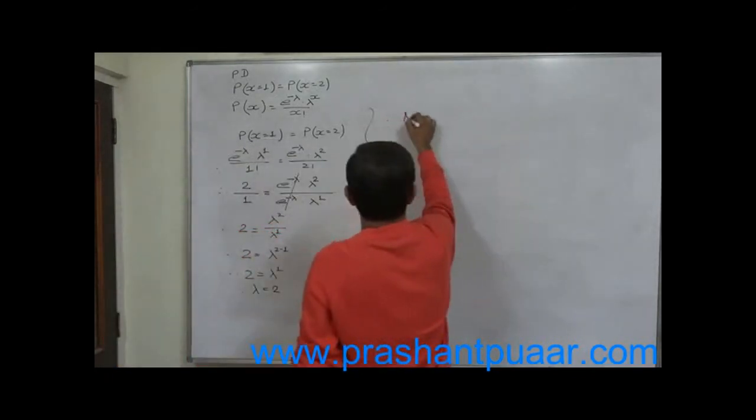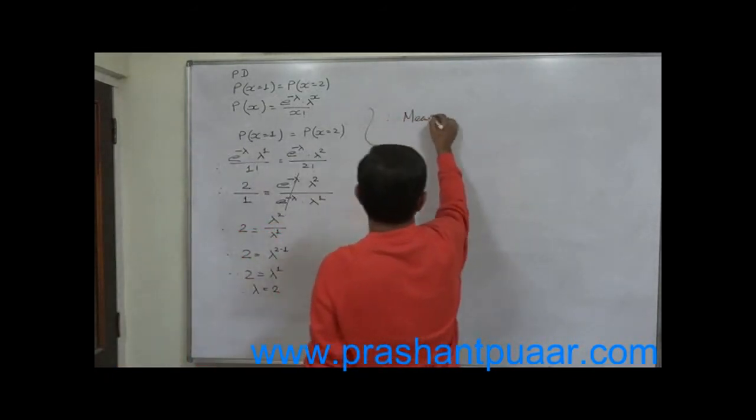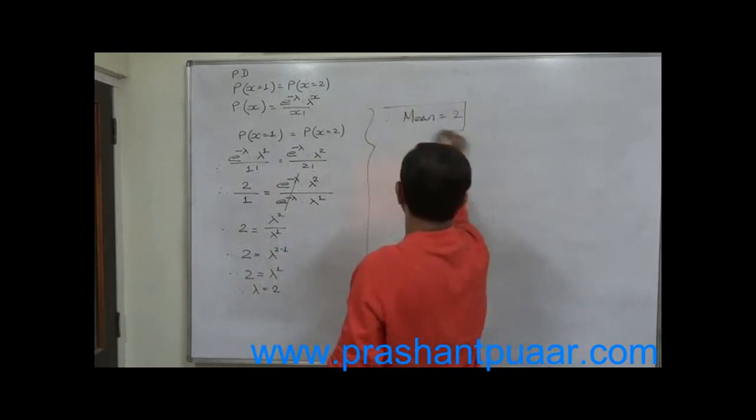Therefore, mean of the given Poisson distribution is 2. This is the first final answer.